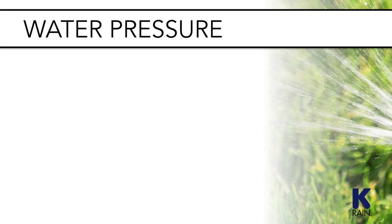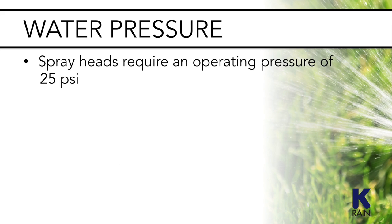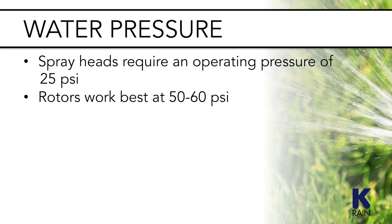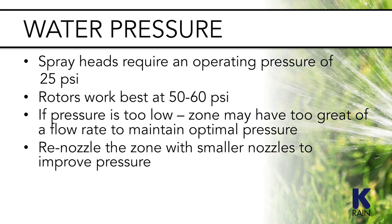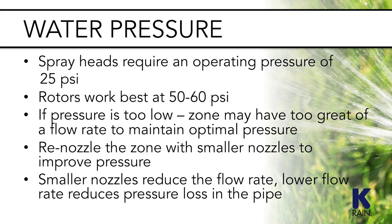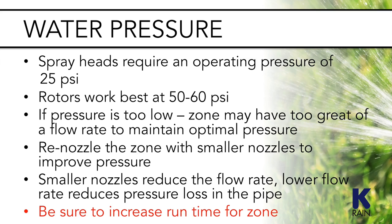Spray heads require an operating pressure of 25 PSI and rotors work best at 50–60 PSI. If the pressure is too low on a single zone, the zone might have too great a flow rate to maintain optimal water pressure. You can re-nozzle the zone with smaller nozzles to improve pressure — the smaller nozzles reduce the flow rate, and the lower flow rate reduces pressure loss in the pipe, increasing the pressure available at the sprinkler heads. If you change the nozzles, be sure to increase the run time for that zone to account for the new precipitation rate.